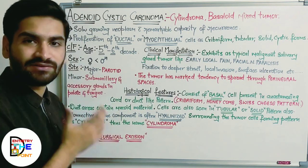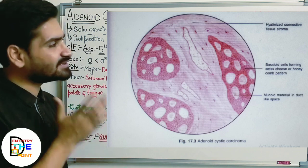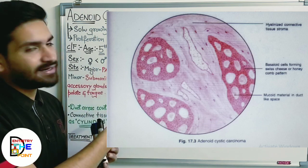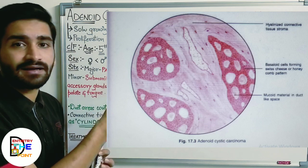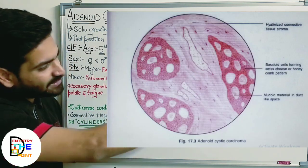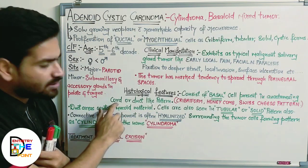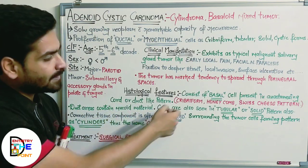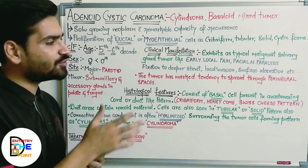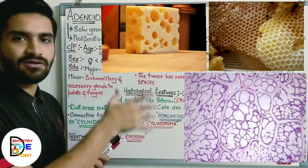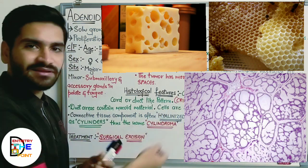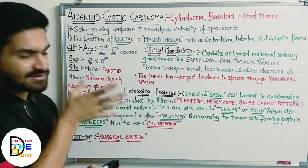Histologically, the tumor shows basaloid cells arranged in the form of cords, solid nests, or a cribriform pattern. The cribriform pattern is considered to be the most common variant. It consists of basal cells present in anastomosing cords or in the form of ducts, mainly in a cribriform, honeycomb, or Swiss cheese pattern. The cells appear as if they are arranged in that characteristic honeycomb arrangement.